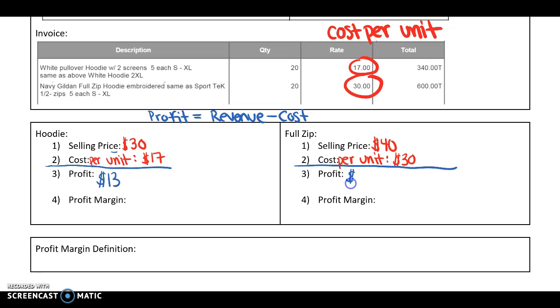40 minus 30 on the full zip, our profit is $10. So we bring in 40, we pay back 30, we get to keep 10. The goal is to be able to analyze which one's going to be more profitable. And if you look at just the numbers, in terms of what our profit we keep is, our hoodie, we're keeping $13. And our full zip, we're keeping 10. So it seems like the hoodie might be more profitable. But it's hard to compare because we charge $40 for the full zip, and we charge $30 for the hoodie.